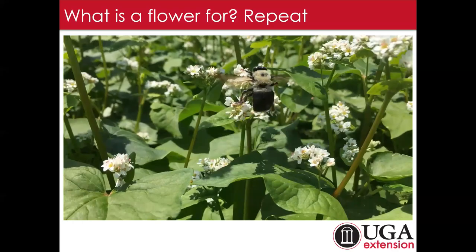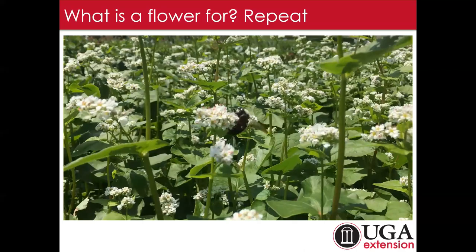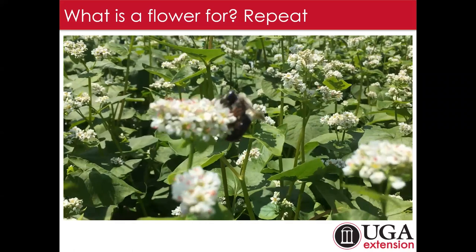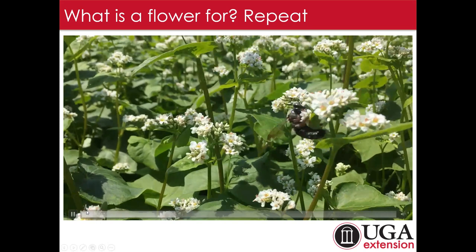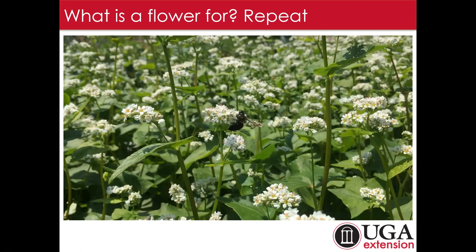This is a video of some buckwheat planting in my garden, and you can see that reward is there and needs to be repeated over and over. For a cucumber, I've read that it can take up to 10 visits to the same flower to get a fully pollinated fruit to develop. One of the most common calls in summertime is people sending pictures of stubby or misshapen squash and cucumbers, and most of the time that's due to incomplete pollination — they got visited once or twice, not 10 times.